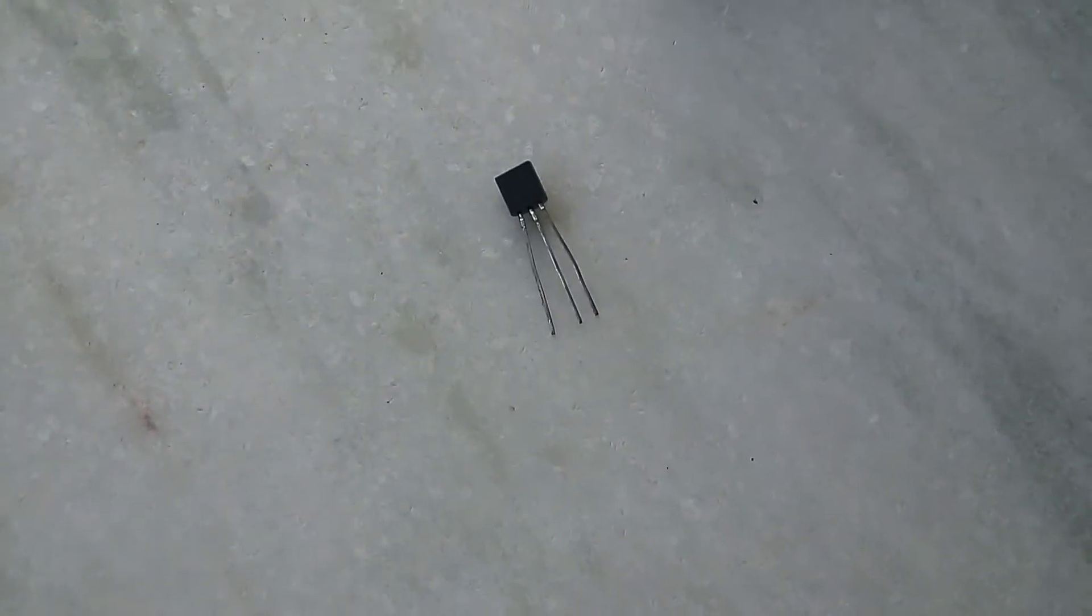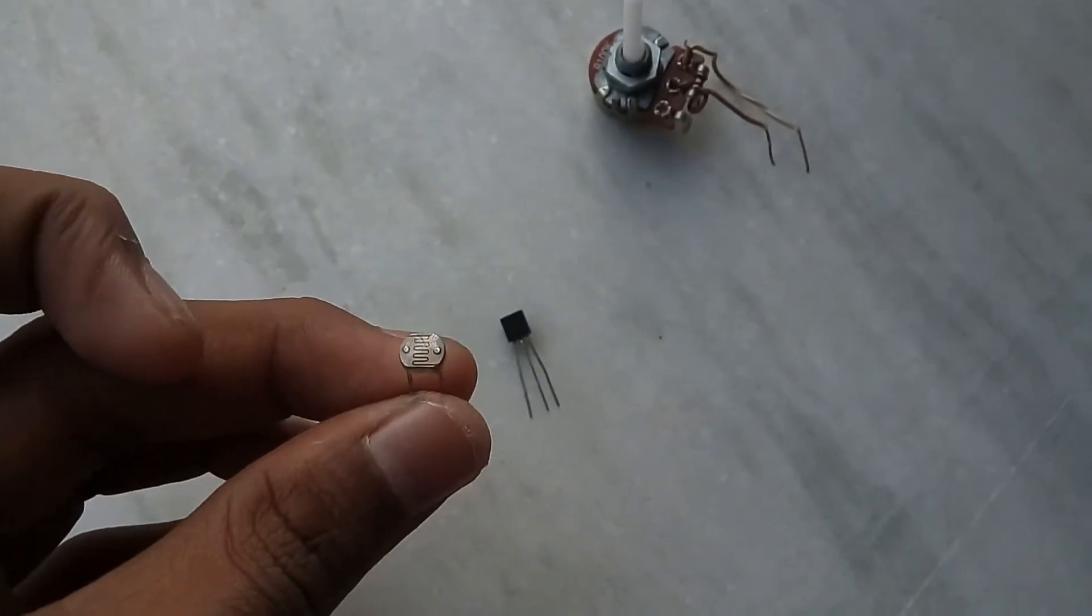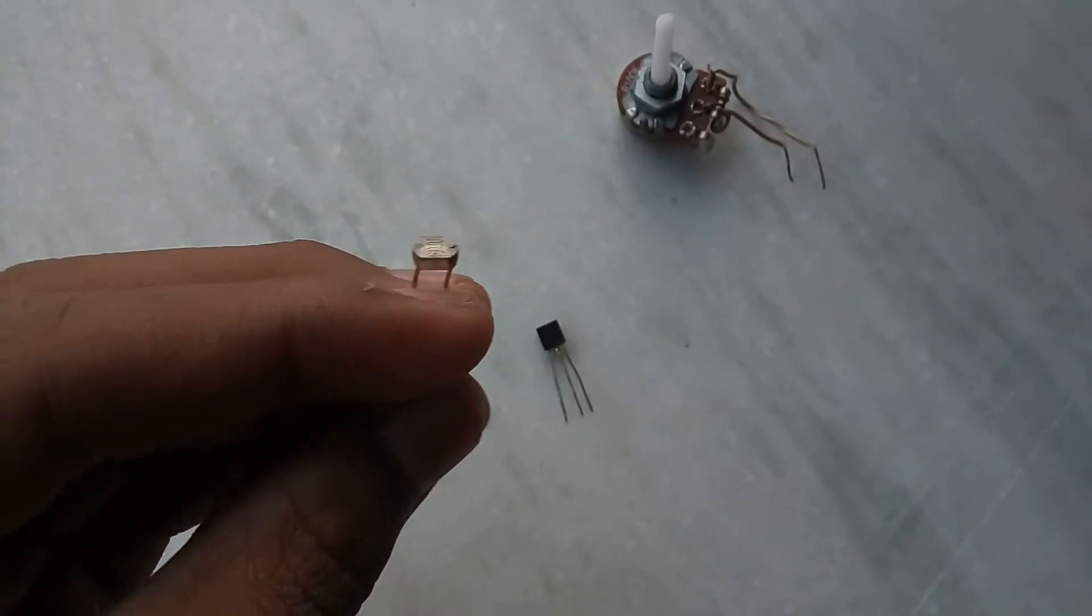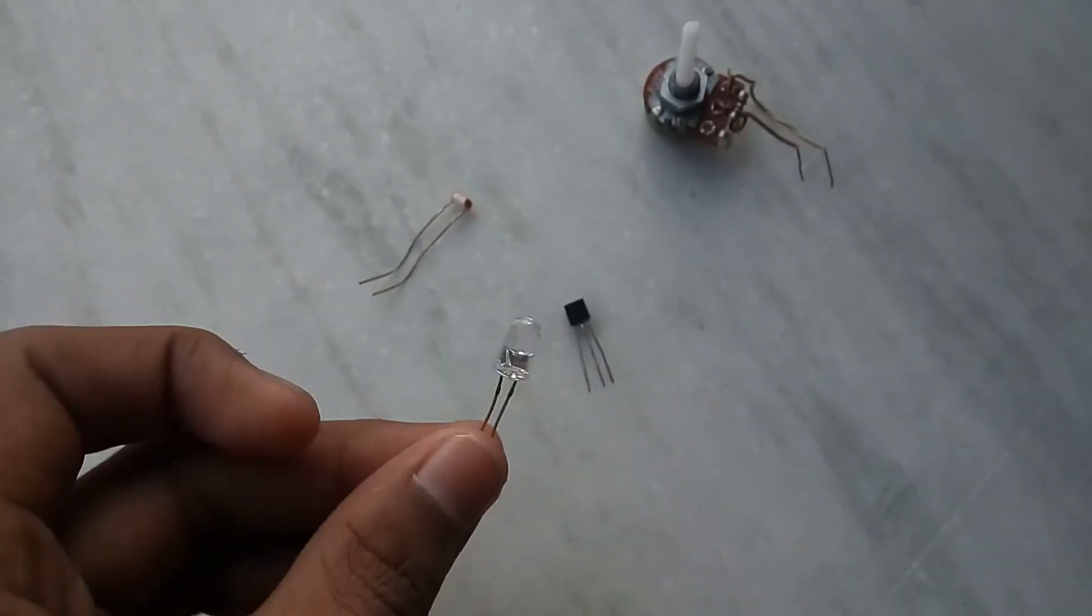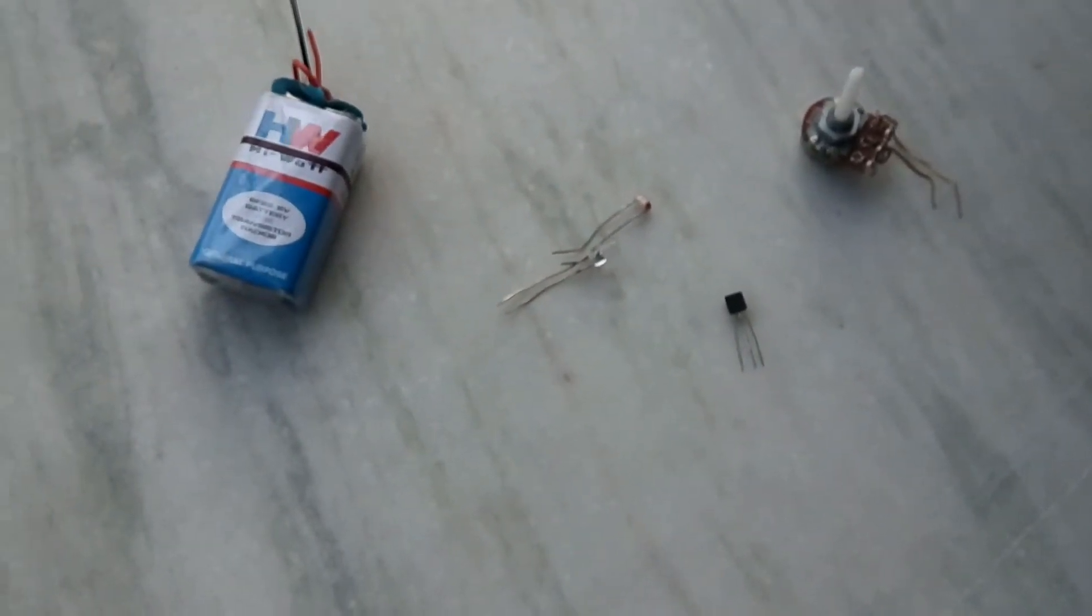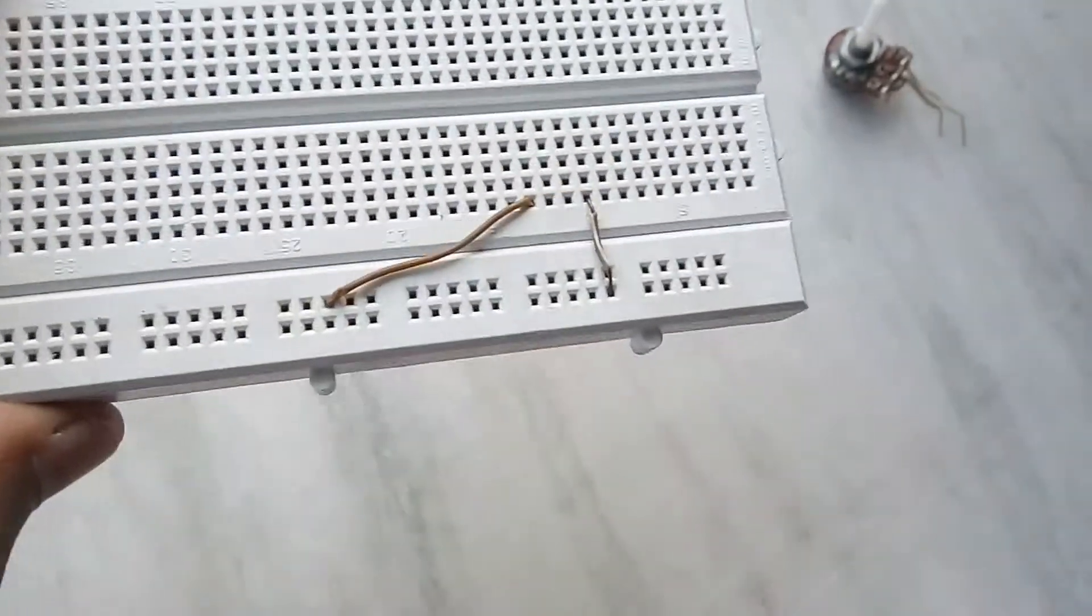It is an NPN transistor, an LDR which is also called as a light-dependent resistor, LED, a 9-volt battery, a breadboard and a few breadboard connectors.